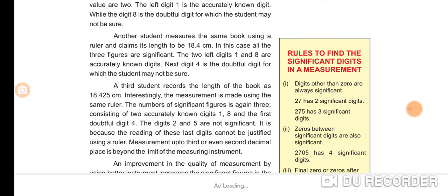Another student measures the same book using a ruler and claims its length to be 18.4 centimeters. In this case, all three figures are significant. The two left digits, 1 and 8, are accurately known digits. The next digit 4 is the doubtful digit for which the student may not be sure.